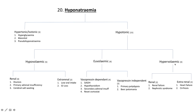On the right-hand side of the algorithm, for hypervolemic hypotonic hyponatremia, we again look at renal versus extra-renal etiologies. If it's renal: renal failure or nephrotic syndrome. If it's extra-renal: heart failure, cirrhosis, and you can also add protein-losing enteropathy there as well.